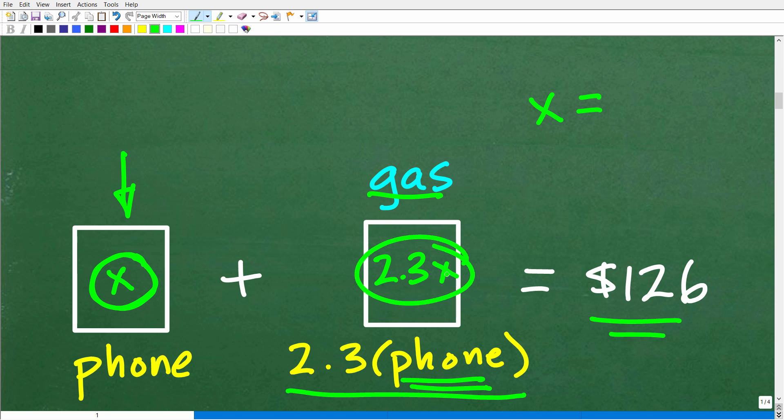So algebraically, it's going to be 2.3 times x. Okay, so x plus 2.3x is going to be equal to $126. So in other words, her phone bill plus her gas bill. And again, we're using algebra now to express the amounts of these bills is a grand total of $126. So if we can figure out what x is equal to, we can determine what her phone bill is. And we can easily determine what the gas bill is as well.